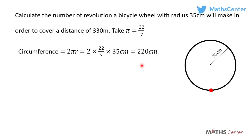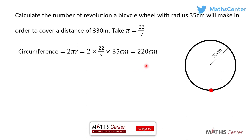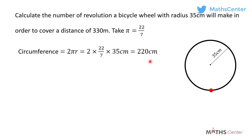This means that when the wheel of the bicycle completes one revolution, it covers a distance of 220 centimeters. To find the number of revolutions the wheel will have to make to cover a total distance of 330 meters, we divide 330 meters by the circumference of the circle, which is 220 centimeters.